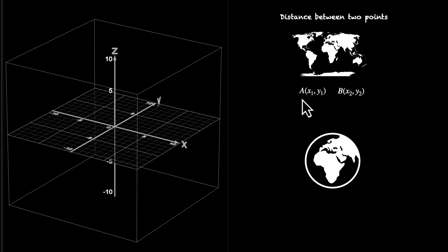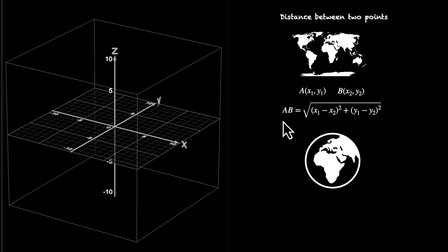For two points A(x1, y1) and B(x2, y2), the distance between them, AB, is given as the square root of (x1 - x2)² plus (y1 - y2)².